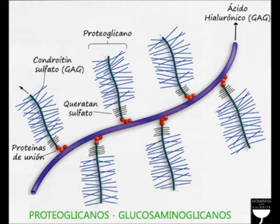Su estructura consiste en una o más cadenas de ácidos como glucosaminoglucanos unidos covalentemente mediante enlaces de nitrógeno u oxígeno, es decir, enlaces N- u O-glucosídicos o glucosídicos, a proteínas integrales de membrana o proteínas de secreción. La unidad básica, por tanto, es la proteína del núcleo. Los glucosaminoglucanos se unen a una secuencia fija de la proteína núcleo.